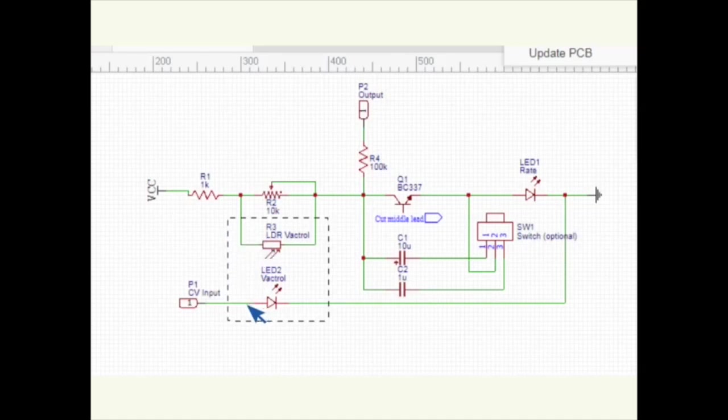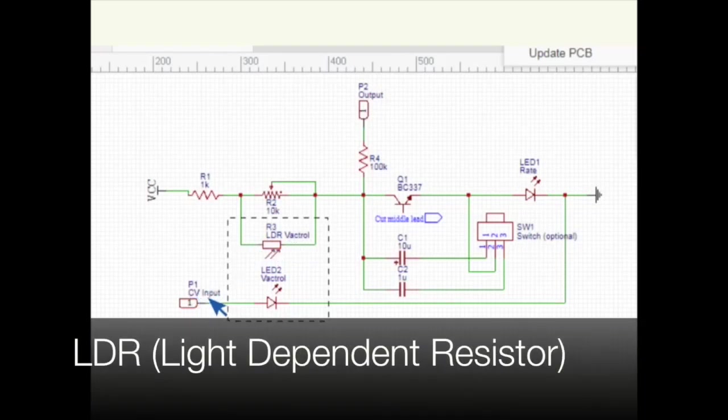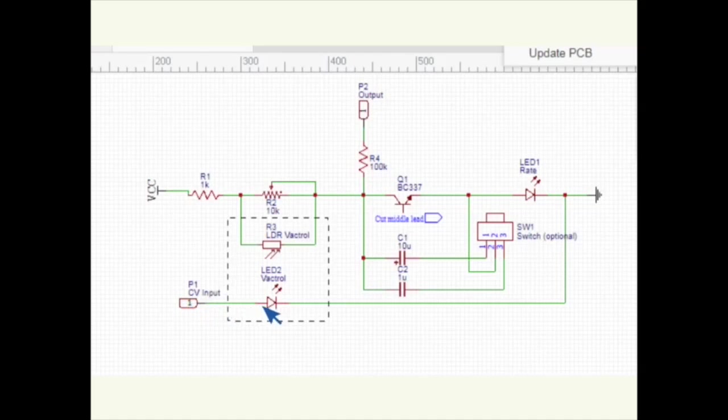So a Vactrol is technically a container with an LED and a light-sensitive resistor in it. And what you do is you, on the CV input, that is just a connection between the input and ground, past the LED in the Vactrol, which then shines on the light-sensitive resistor, which then changes the value. And we put this in parallel with the potentiometer. And that makes us being able to change the value on the potentiometer and also via CV.